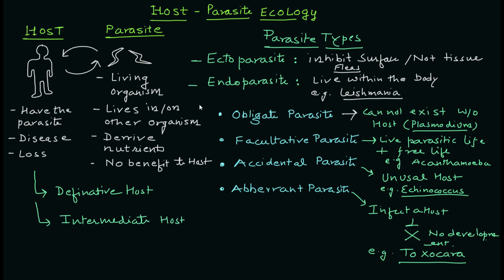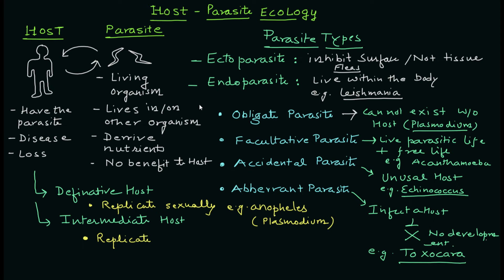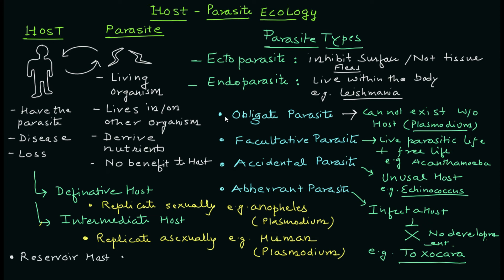The definitive host is the specific host where the parasite reproduces sexually. For example, Plasmodium replicates sexually inside the Anopheles mosquito — so the mosquito is the definitive host. The intermediate host is where asexual reproduction occurs. Plasmodium replicates asexually inside humans, making humans the intermediate host. There are also other host types such as reservoir host, paratenic host, and amplified host.